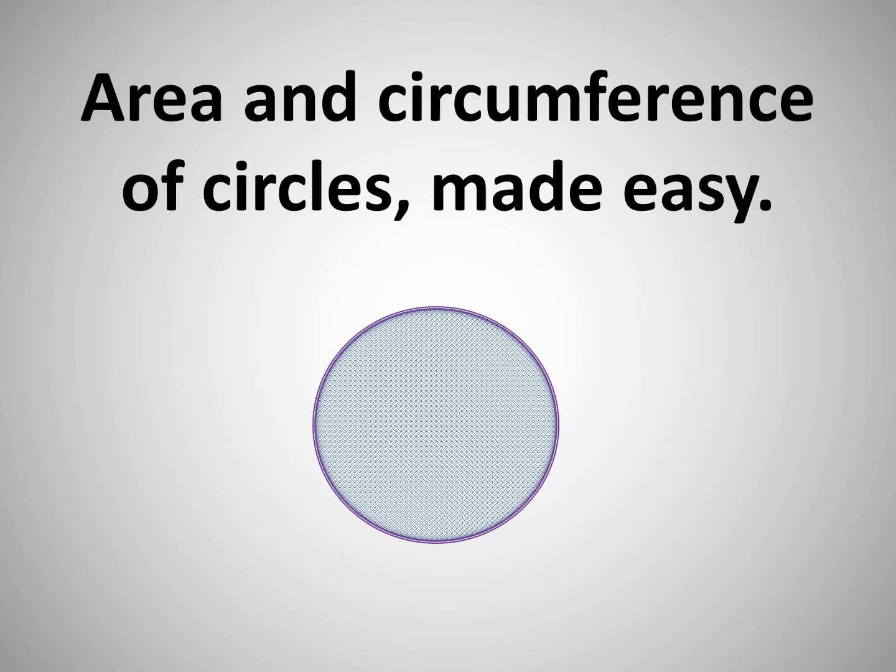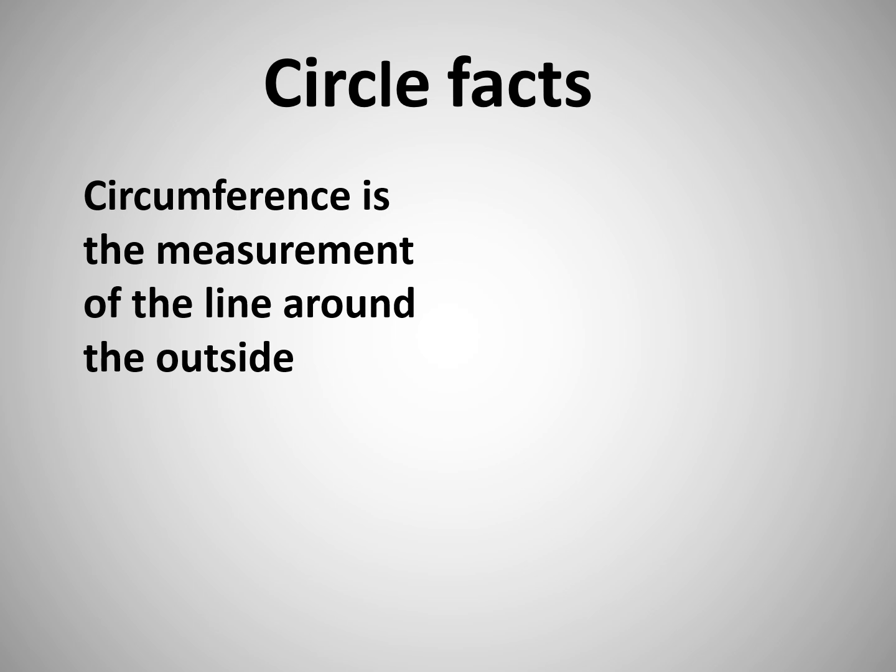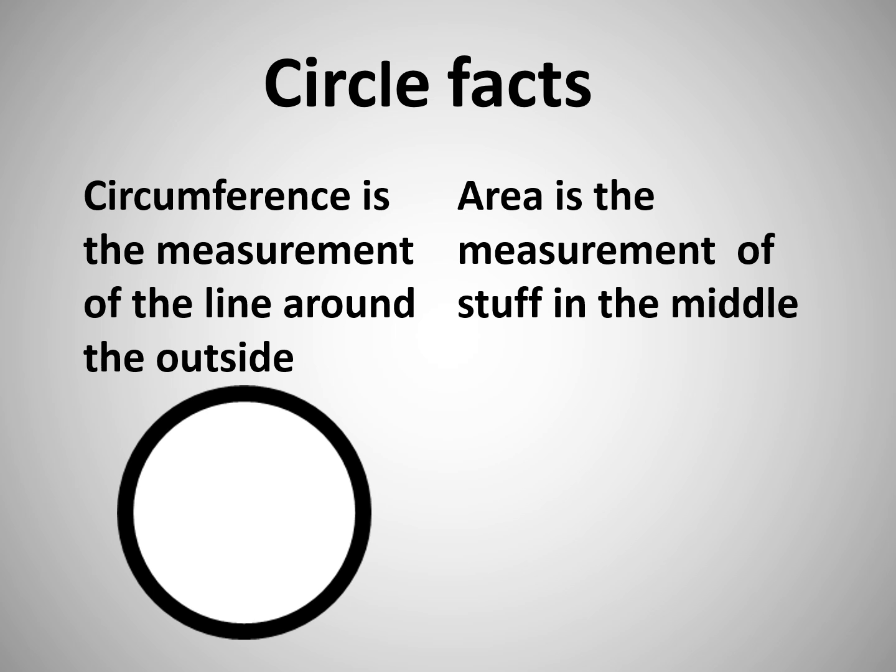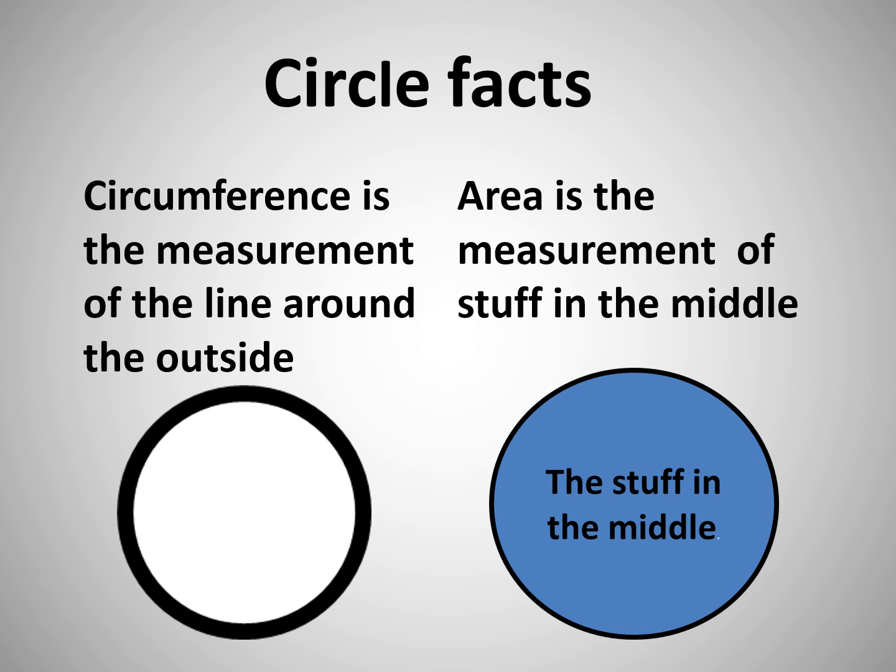Area and circumference of circles made easy. Now let's have a look at some circle facts. Circumference is the measurement of the line around the outside of the circle, and area is the measurement of all the stuff in the middle.